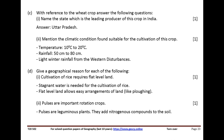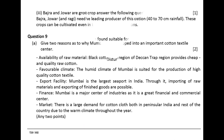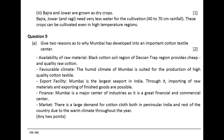Give a geographical reason for each of the following. Cultivation of rice requires flat level land: stagnant water is needed for the cultivation of rice, and flat level land allows easy arrangement of land. Pulses are important rotation crops: pulses are leguminous plants and add nitrogenous compounds to the soil. Bajra and Jowar are grown as dry crops: they need very little water for cultivation and can be cultivated even in high temperature regions.